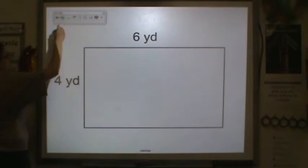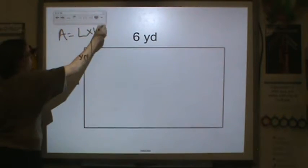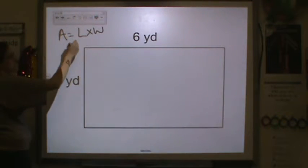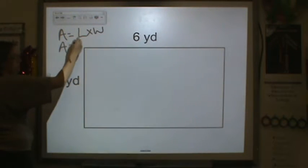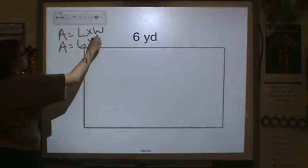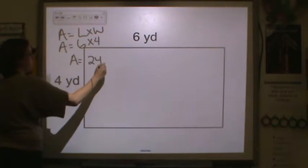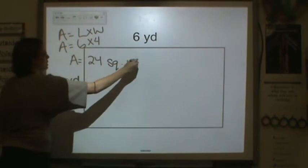Last one together. Area is equal to length times width. So here, we have area is equal to 6 times 4. Area is equal to 24. We have square yards.